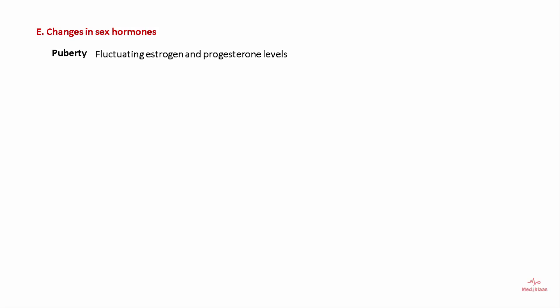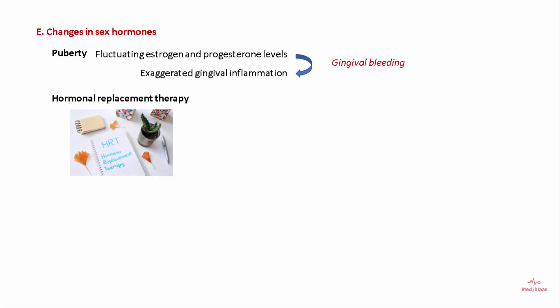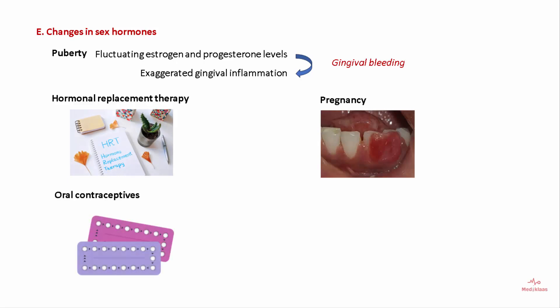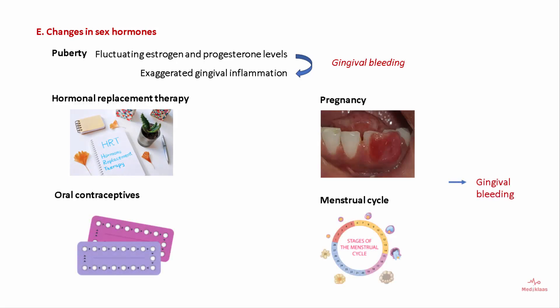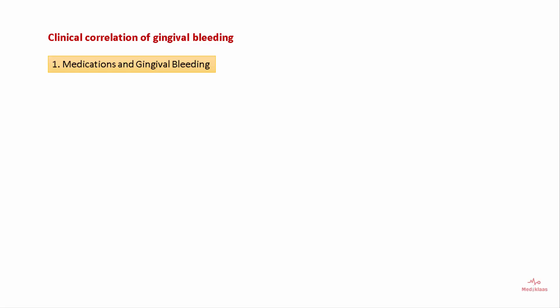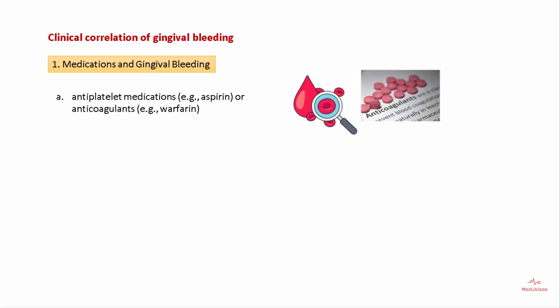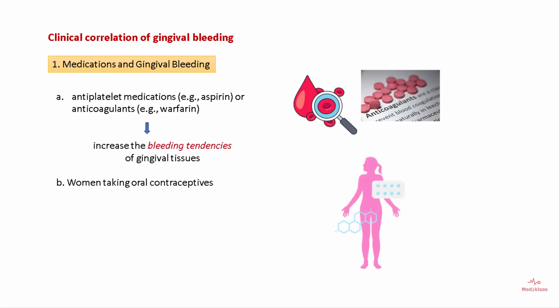Other causes include changes in sex hormones, which can occur during puberty with fluctuation of estrogen and progesterone levels. These are associated with exaggerated gingival inflammation resulting in gingival bleeding. Hormonal replacement therapy, pregnancy, oral contraceptives, and the menstrual cycle are all associated with increased gingival bleeding. Anti-platelet medications like aspirin or anticoagulants like warfarin increase the bleeding tendency of gingival tissues. Women taking oral contraceptives are significantly more prone to gingivitis and therefore gingival bleeding.